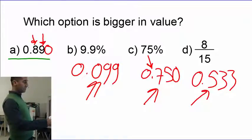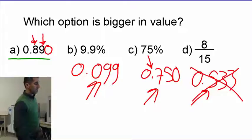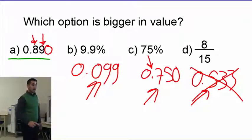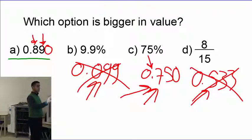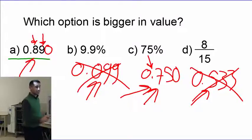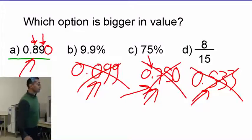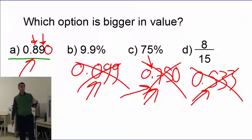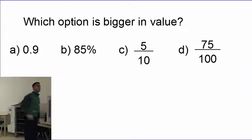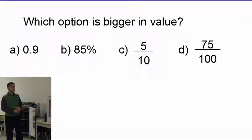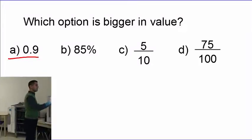Now every single option has three digits. I'm going to consider 533, but then 750 — that's bigger. And this is just 099, so 750 is bigger than that. But I have 890 here, so that's actually bigger than 750. The biggest value is option A.